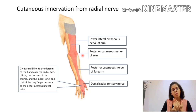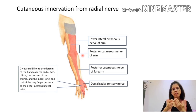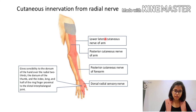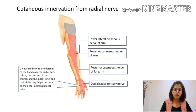Now regarding cutaneous innervation: the superficial division supplies the lateral half of the dorsum of the hand and the lateral two and a half digits till the distal interphalangeal joints. Three cutaneous branches are given: one is the lower lateral cutaneous nerve of the arm, next is the posterior cutaneous nerve of the arm, and the third is the posterior cutaneous nerve of the forearm — each supplying the corresponding area over the upper limb.